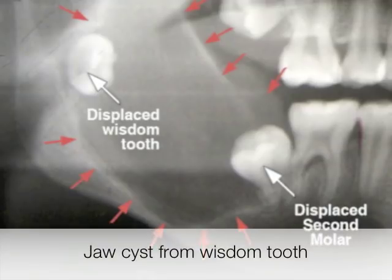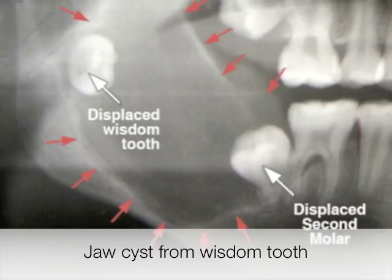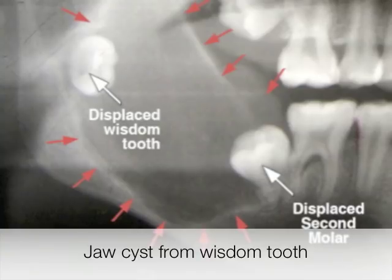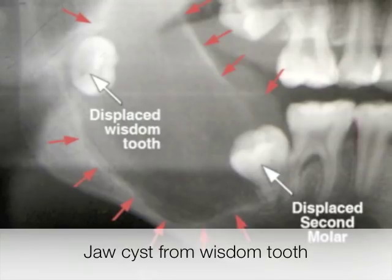Wisdom teeth can also cause certain types of cysts that result in significant destruction of bone and damage to the adjacent teeth, bone, and other structures. They can become quite large and weaken the jawbone with a potential fracture. Certain cysts can also become more aggressive and become malignant.